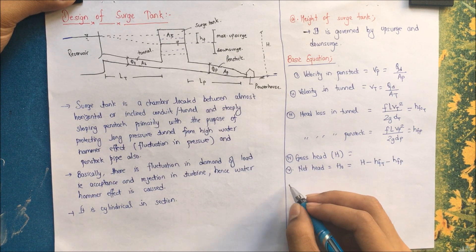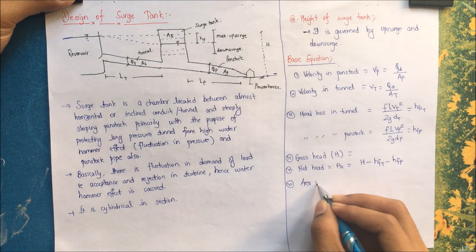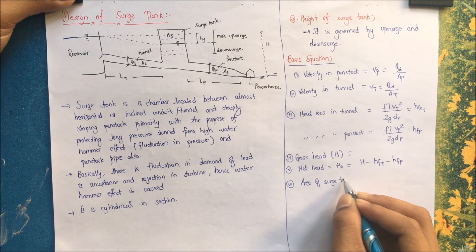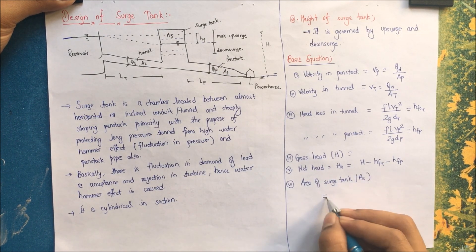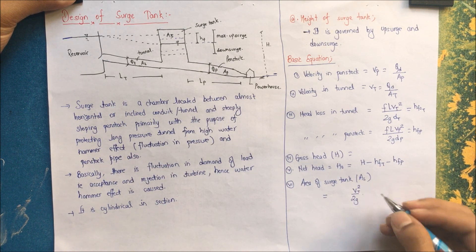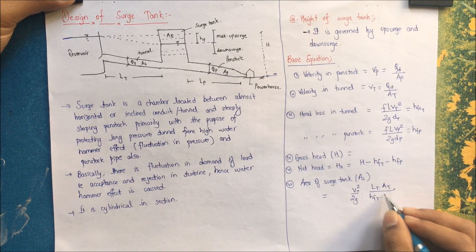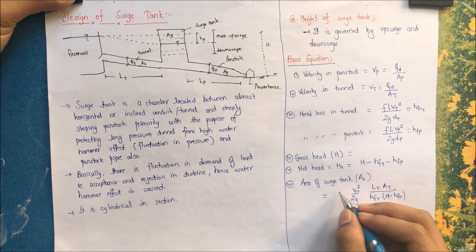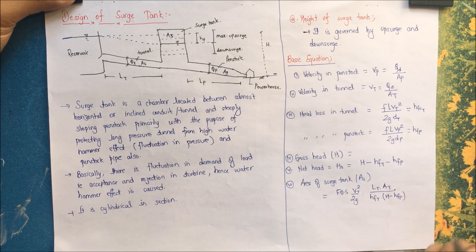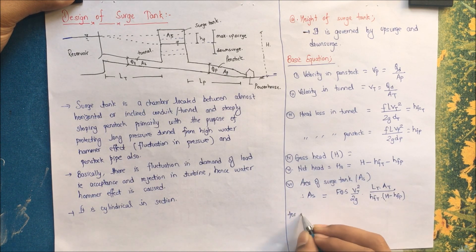Step six: the area of surge tank As = (Vt² / 2g) × (Lt × At) / (hft × (H − hfp)), multiplied by a factor of safety, giving us the required area of surge tank. For maximum surge: Zmax = Q × √(L / (At × As × g)).